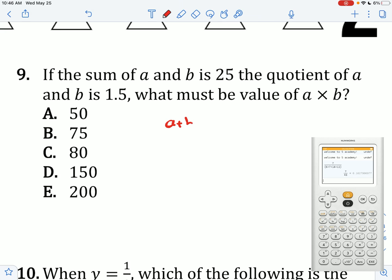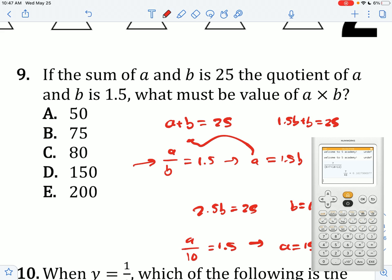If the sum of A and B is 25, and the quotient of A and B is 1.5, what must be the value of A times B? I'm going to turn this into A equals 1.5B, then move that A up here. We get 1.5B plus B equals 25. 2.5B equals 25. B equals 10. That means A over 10 equals 1.5. A equals 15. B times A is going to be 150.